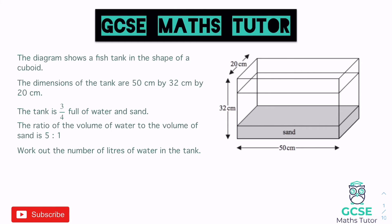For this question, we actually have an easier volume to work out, but the concept of the question is different. It says the diagram shows a fish tank in the shape of a cuboid — and with a cuboid the volume is nice and easy. The dimensions are 50 cm by 32 cm by 20 cm. The tank is three quarters full of water and sand, and the ratio of the volume of water to the volume of sand is 5 to 1. Work out the number of litres of water in the tank.